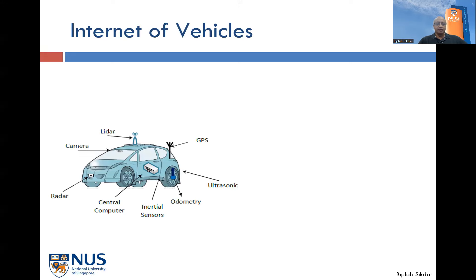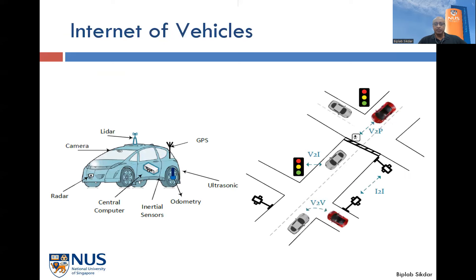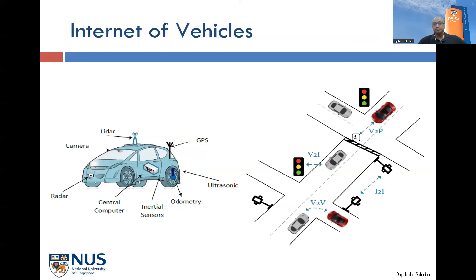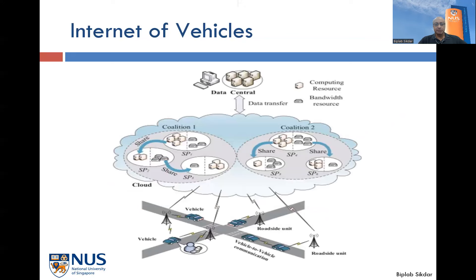Increasingly, our vehicles are being equipped with a large number of sensors and onboard computers. A typical vehicle now would have close to 100 microprocessors and a large number of associated sensors. Historically, all the data generated by these sensors was processed onboard in the vehicle itself. But now we see vehicles communicating with other vehicles — V2V communications — or with roadside infrastructure or pedestrians. By exchanging this kind of information, we can make our transportation system more efficient, more safe, and more robust against various disturbances.